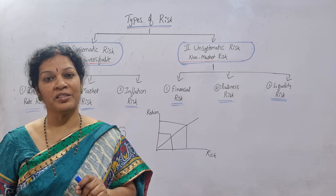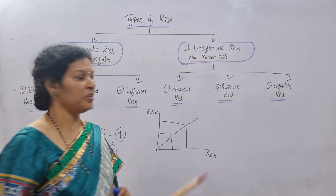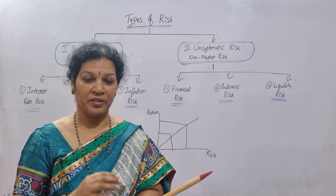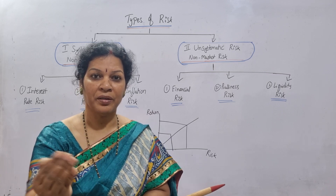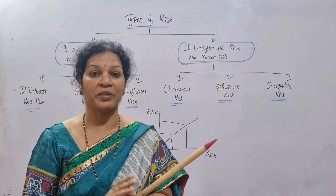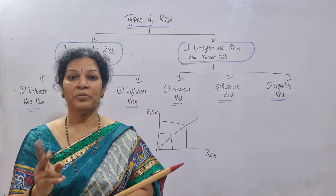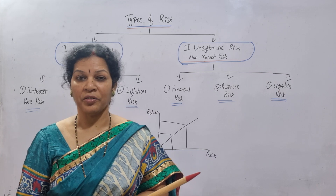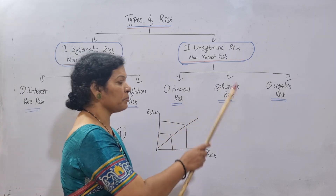Three kinds of risk come under unsystematic: financial risk, business risk, and liquidity risk. Financial risk means however you are using your investments — if you are investing somewhere or somebody has invested in your organization, how you use it determines the risk. Also, sometimes you may be engaging in credit transactions; they may or may not return payment. It is in the hands of the organization to handle it carefully.